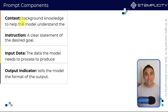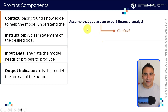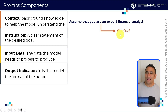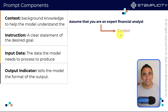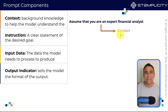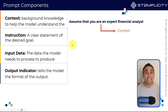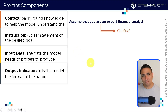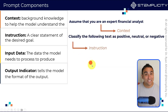For example, you can ask the AI to assume that you are an expert financial analyst, or assume that you are an expert data scientist. The idea is that you are giving the AI a persona — and that's what we call context. Next, we give it clear instructions: think of it as a clear statement of the desired goal.